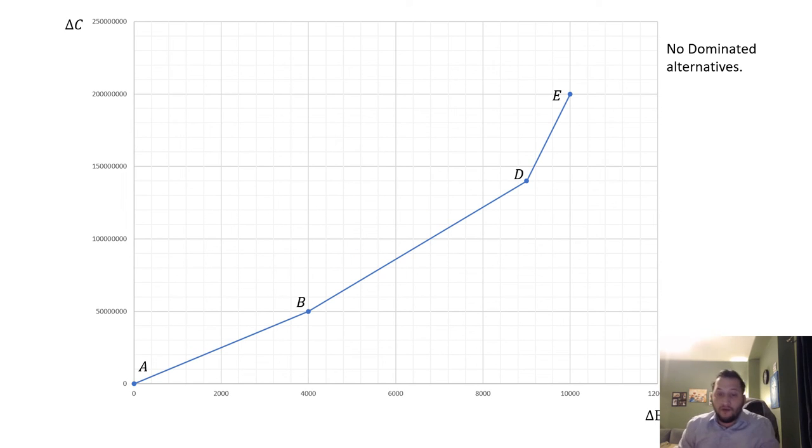Now if we drop out C here, do we have any options which are extendedly dominated? No, because if we try drawing a chord between any two treatment options, we'll get a case where it will lie above or on each one of these curves. So we don't have any extended dominance here.